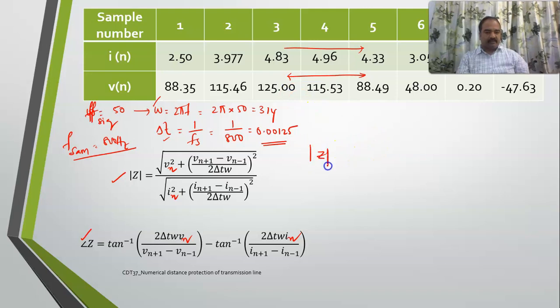If I want magnitude of impedance, square root of - this is Vn, this is Vn minus 1, this is Vn plus 1, this is In, this is In minus 1, and this is In plus 1.